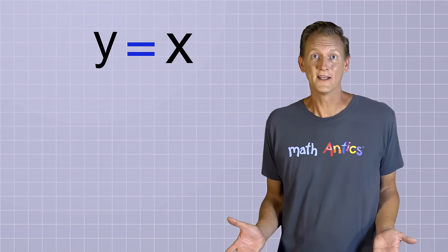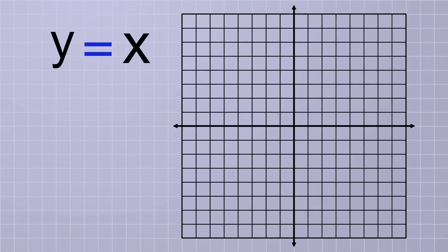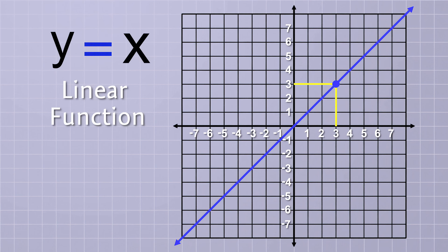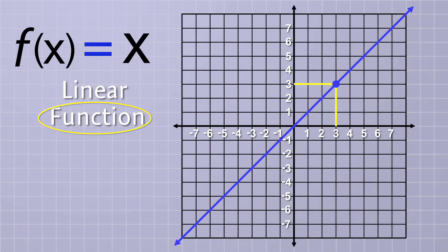That might seem kind of pointless, but if we graph that function on the coordinate plane, you'll see that it forms a diagonal line that passes through the origin and splits quadrants 1 and 3 exactly in half. Notice that for any point along the line, the x-coordinate and the y-coordinate are the same. So y equals x is a very simple linear function. And remember, we could use either the variable y or the function notation f interchangeably, but we're going to use y in this video to keep it simple.